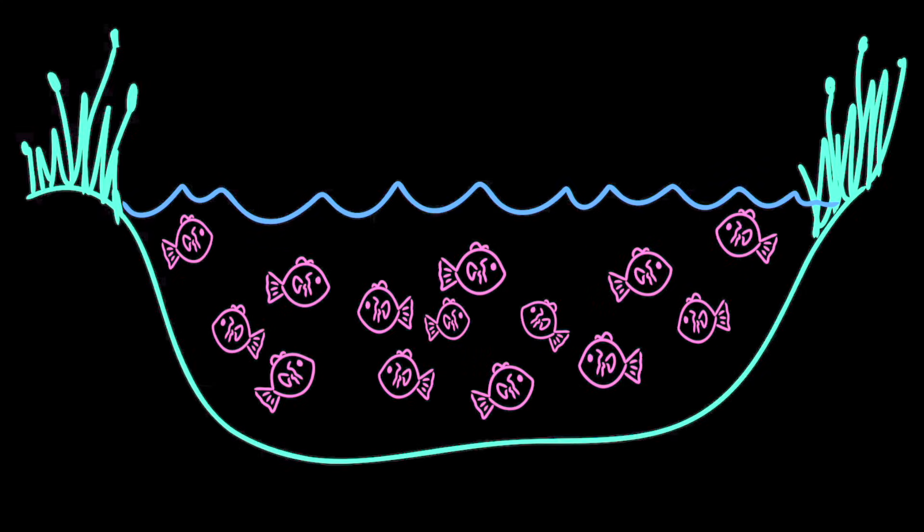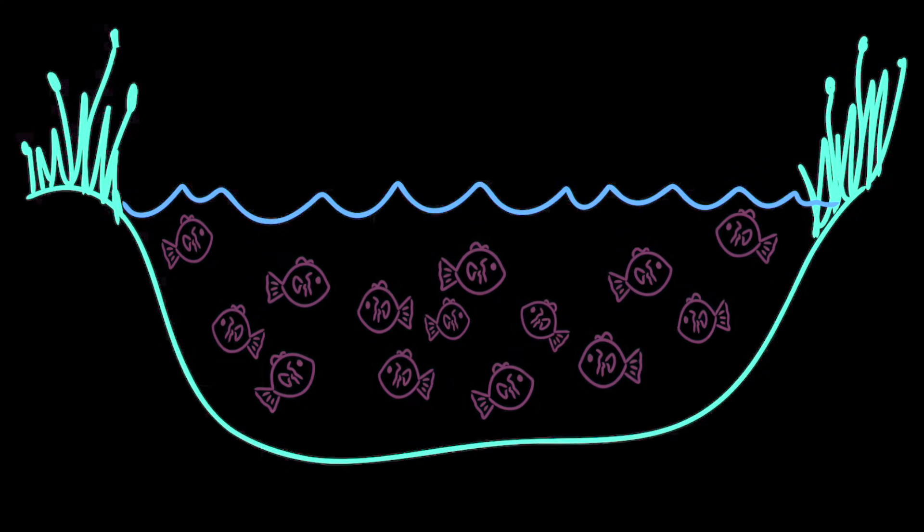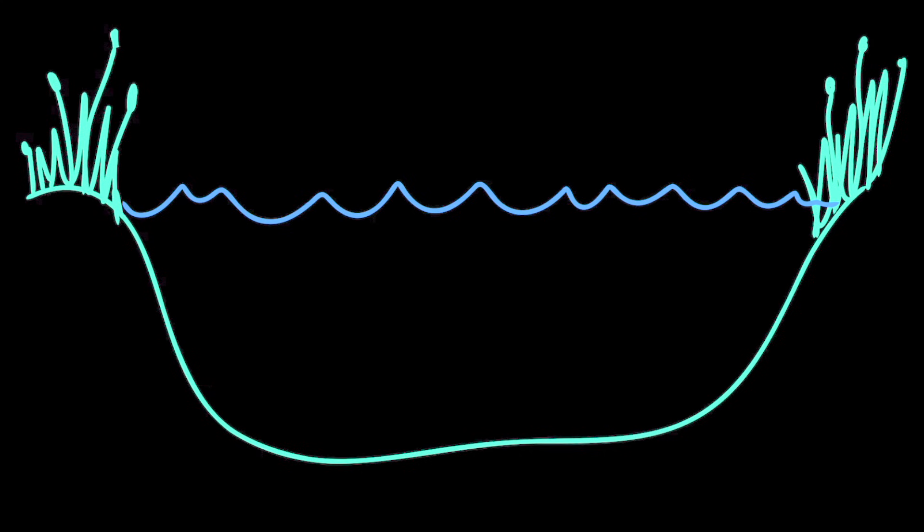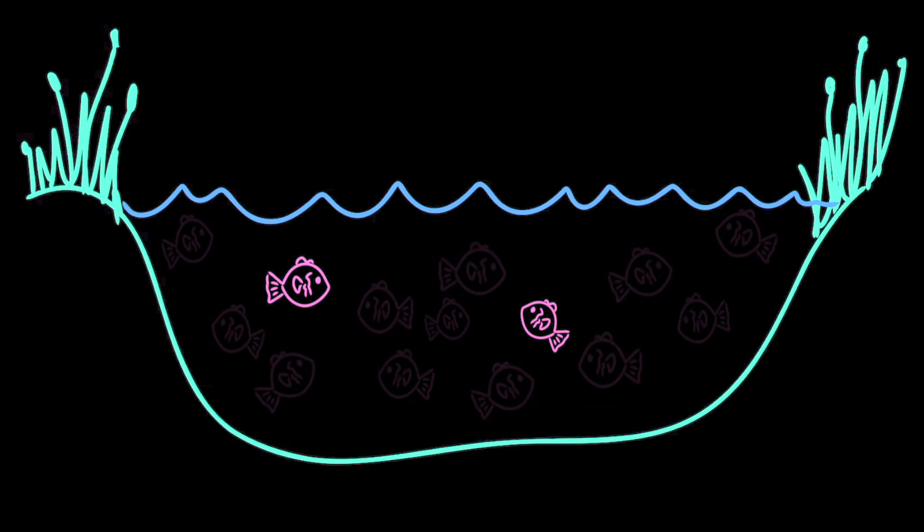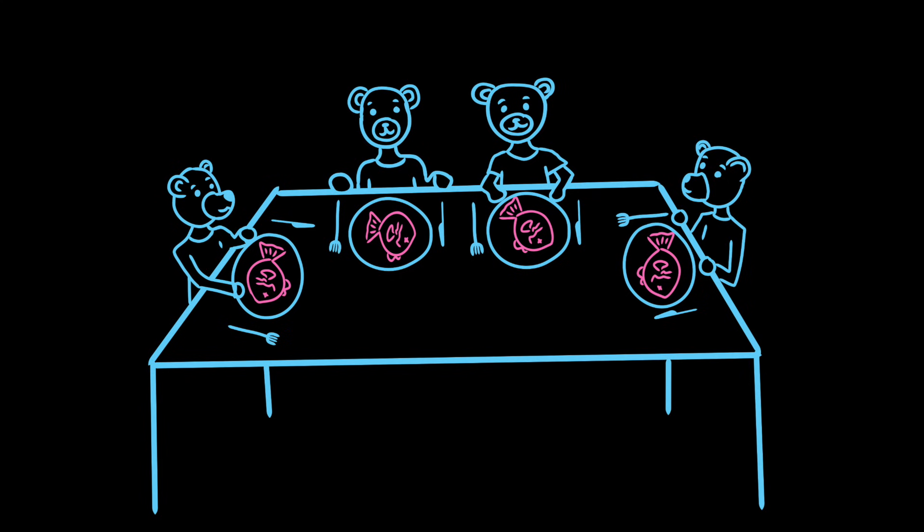But if you decided to take all of the fish out of the pond, then there wouldn't be any left to reproduce. So your feast next year would be pretty sad. Even if you just left a couple of fish in the pool, they might not be able to reproduce enough to replenish the population. Other environmental factors might cause the small fish population to go down even further. The fish might catch diseases, run out of food, or end up being some other creature's feast.